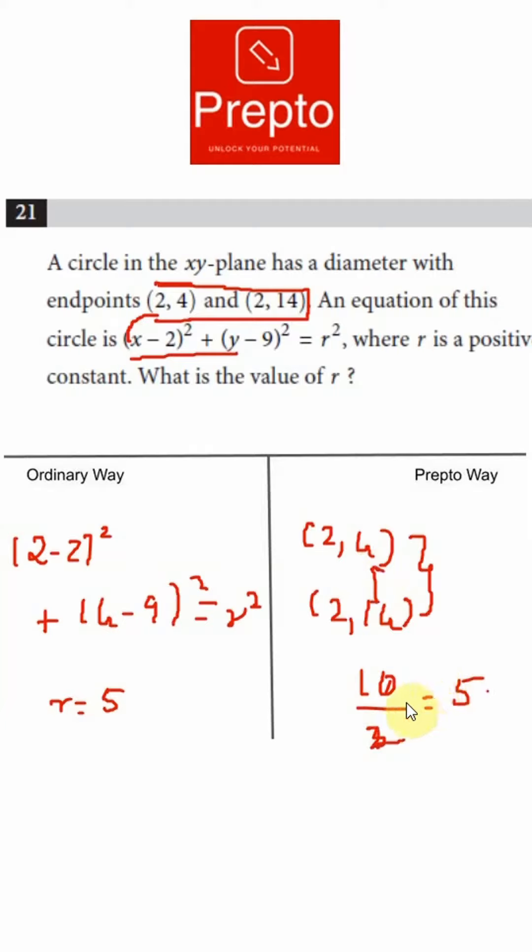So Prepto really helps you save a lot of time. Even if it is not on the same line like (2,4) and (2,14), you could still use the distance formula and make it quicker instead of substituting into an equation.